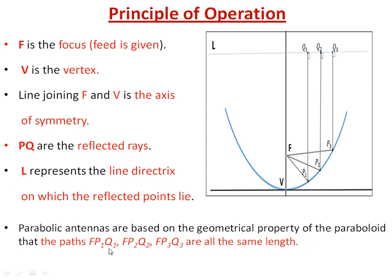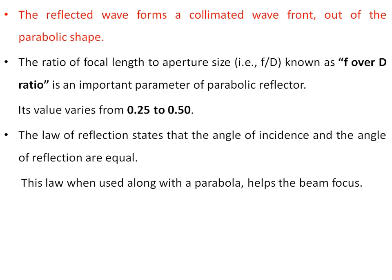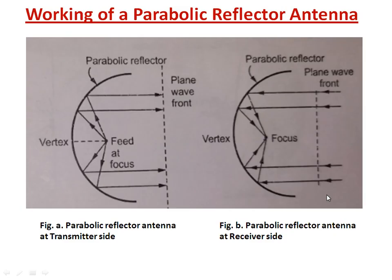The reflected wave forms a collimated wavefront out of the parabolic shape. The ratio of focal length to aperture diameter, F/D, is an important parameter of the parabolic reflector, with values ranging from 0.25 to 0.50. The law of reflection — angle of incidence equals angle of reflection — applies along the parabola, helping the beam to get focused and improving the radiation pattern.